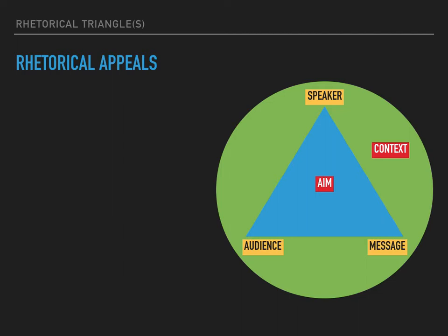The rhetorical triangle also gives us a structure we can use to understand rhetorical appeals, or the methods that speakers use to achieve their aims. There are four major types of appeals, each tied more to one part of the rhetorical triangle than the others, though they all overlap in reality and can work together. If you've taken AP Language and Composition, you may have heard of these different elements and know how to identify them, but we're going to try and go a little bit deeper than you may have done before.